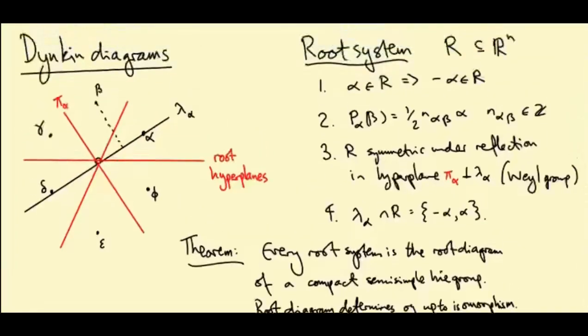Instead, I'm going to classify the possible root systems up to isometry. And so that, together with this theorem, will give us a classification of the Lie algebras of compact semi-simple groups.